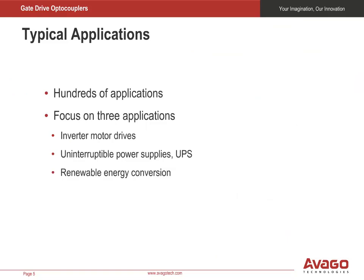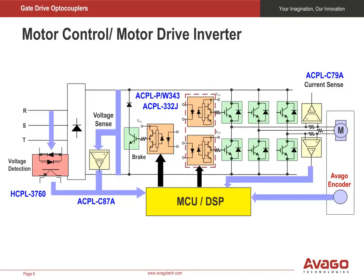There are hundreds of applications that we could discuss, but today we will focus on the three major ones: inverter motor drives, uninterruptible power supplies, and renewable energy conversion. This diagram shows the architecture of a widely used three-phase industrial motor application based on optically isolated inverter drivers. We can see the three-phase mains input is rectified to get a DC bus voltage to power the three-phase inverter IGBTs.